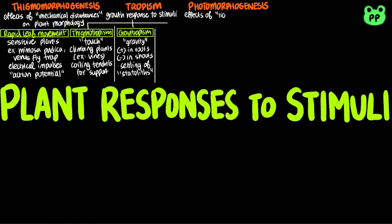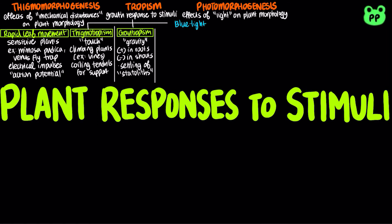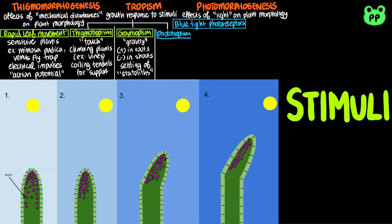Photomorphogenesis refers to effects of light on plant morphology. There are two major classes of light receptors: blue light photoreceptors and phytochromes. Blue light photoreceptors play a role in phototropism, which is the growth response to light. Blue light is detected by blue light photoreceptors at the shoot tip. The plant hormone auxin accumulates on the dark side, increasing cell expansion on the dark side, causing the plant to bend towards light.